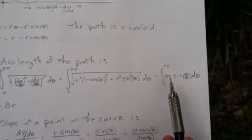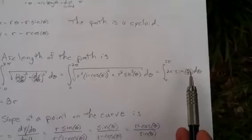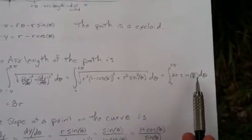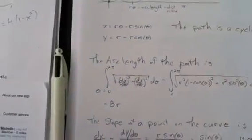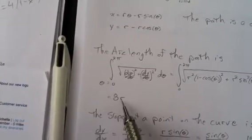Now, remember here we're taking the anti-derivative, the integral of theta, not r. So, r is a constant, it's just hanging out. After cleaning that up, you should end up with 8r.